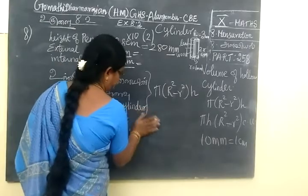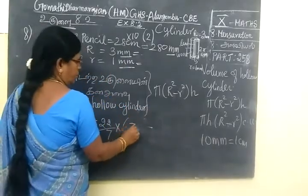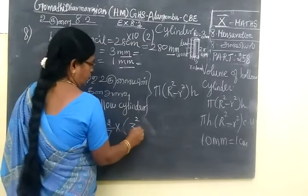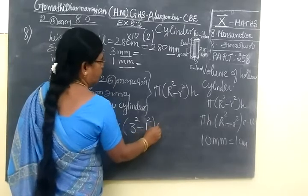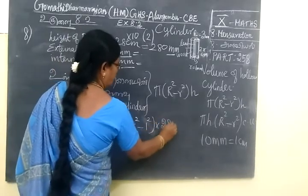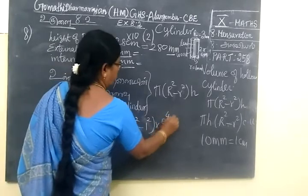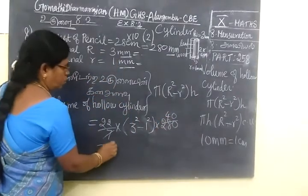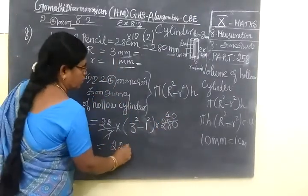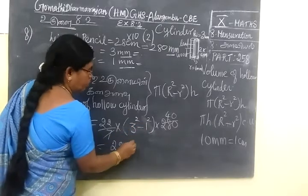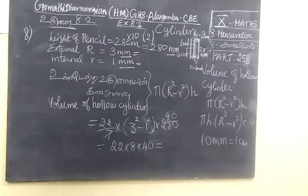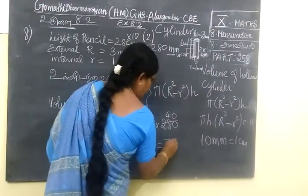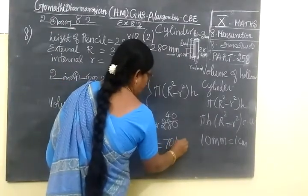So 22/7 × (3² - 1²) × 280. So 22 × 3² is 9, 9 - 1 is 8 × 40. So if you multiply this, you are getting 7040.